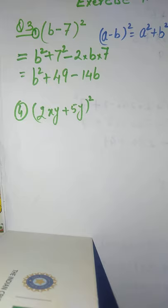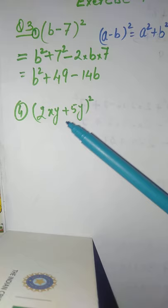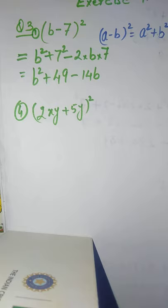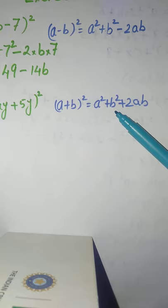The next expression is (2xy + 5y) whole square. Here the first term is 2xy and the second term is 5y. We take 2xy as a and 5y as b, and apply the identity of (a + b) whole square, which equals a square plus b square plus 2ab.